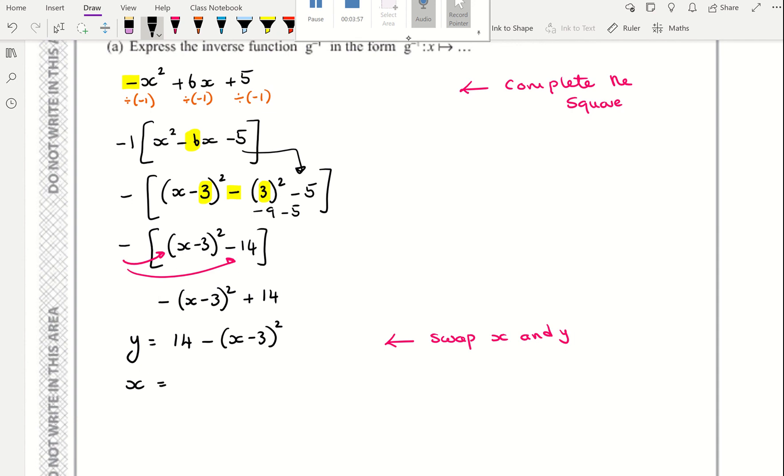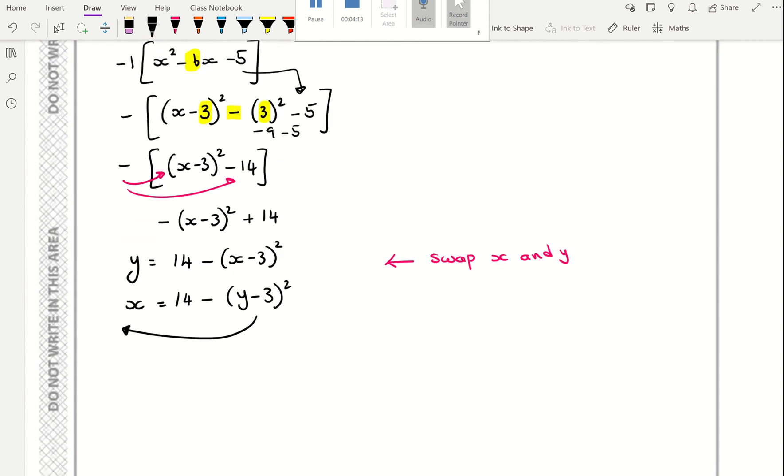So y becomes x, 14 minus the x becomes a y. Now I need to rearrange to make y the subject again. I'm going to rearrange by moving this over there, because I want it to be positive. It makes life easier. I'm also going to subtract x and move it to the other side. So I've now got y minus 3 squared, a positive y minus 3 squared equals 14 minus x.